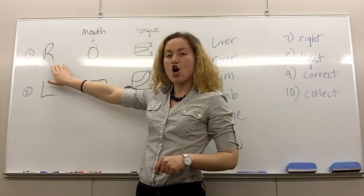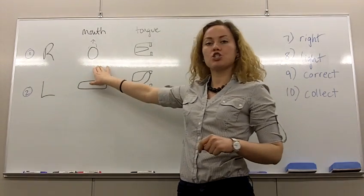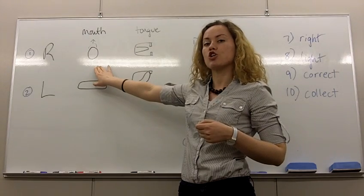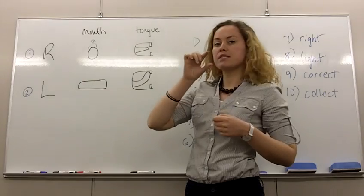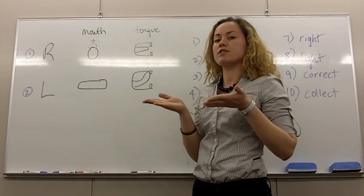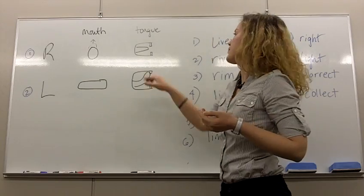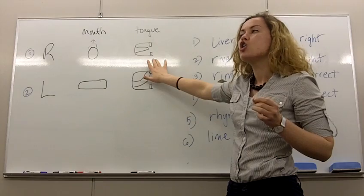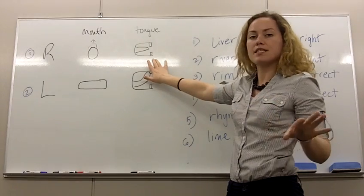With R, your mouth should look like a circle. The sound is R. Your lips go slightly upwards and your chin sticks out. Your tongue is in the middle of your mouth. It does not touch your teeth.